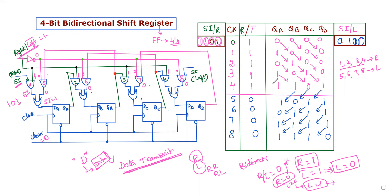We can perform right-shifting or left-shifting operations. Using serial output, we get serial outputs from the shift register. There are types of shift registers: serial in serial out, serial in parallel out. If you need to perform more than two operations, that is called a universal shift register. In the next video, I will explain the universal shift register.